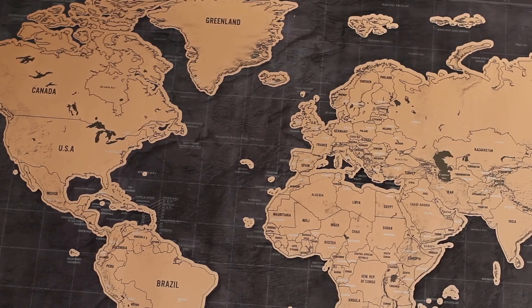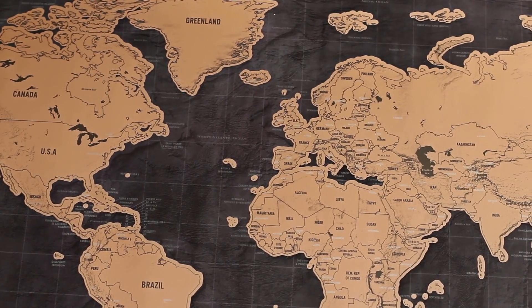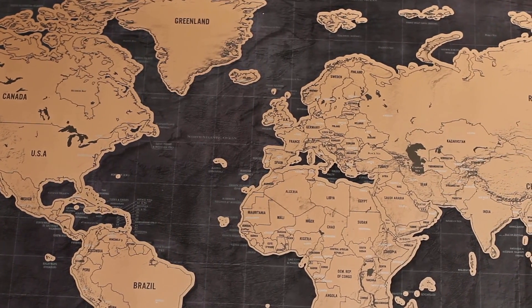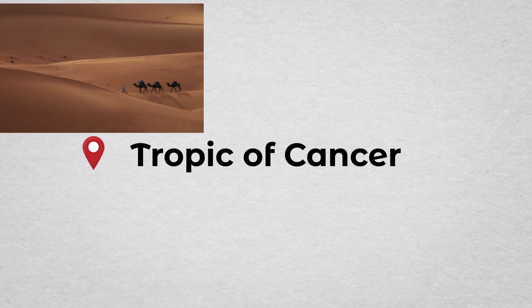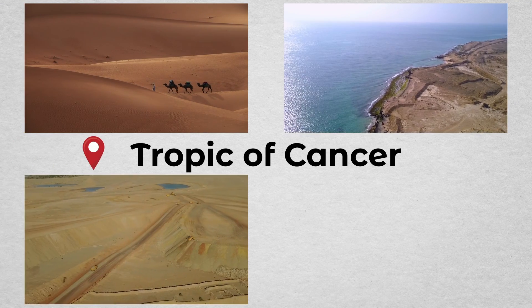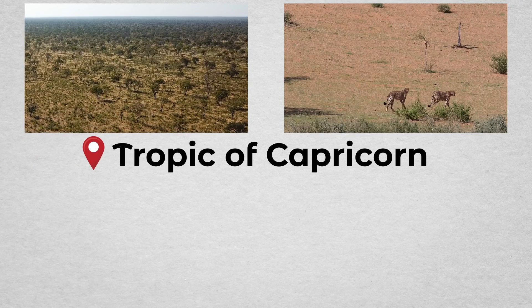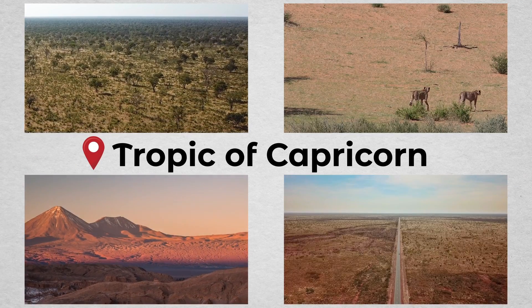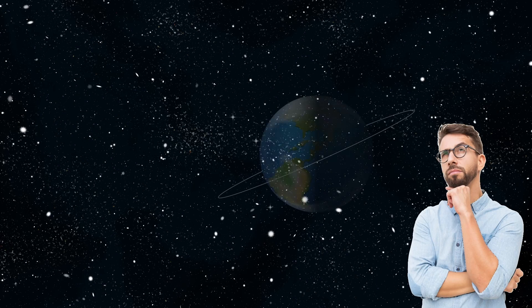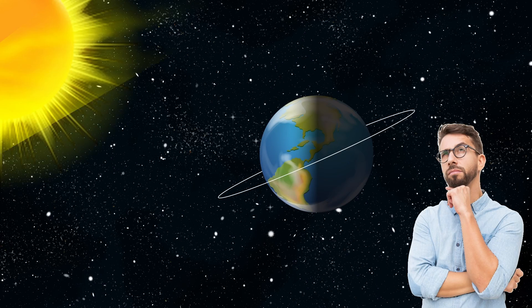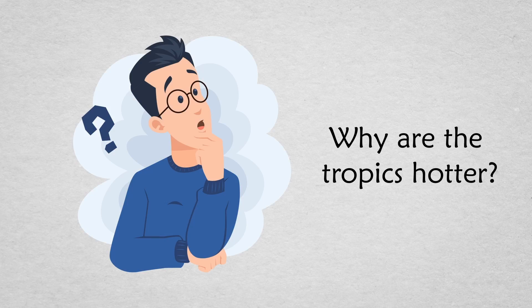When analyzing a world map showing the planet's major deserts, one would find these barren wastelands close to the Tropic of Cancer — like the Sahara, Iranian, Thar, and North American deserts — or the Tropic of Capricorn, where the Namib, Kalahari, Atacama, and Australian deserts are situated. This might seem peculiar since the equatorial regions, not the tropics, absorb the highest amounts of sunlight. So why are the tropics hotter?